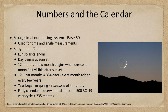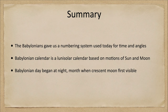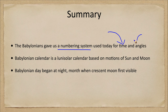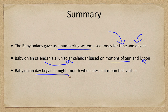So let's summarize what we've looked at. The Babylonians gave us a numbering system — the sexagesimal system — still used today for time and angles. We also looked at the Babylonian calendar, which was a lunisolar calendar tracking the motions of the sun and the moon. We also discussed how the Babylonian day began at night.